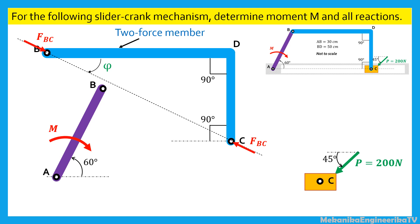The force FBC in C is applied by the slider C on the bar BDC. Thus, the bar BDC applies on the slider C the same force FBC in C, but in the opposite direction.